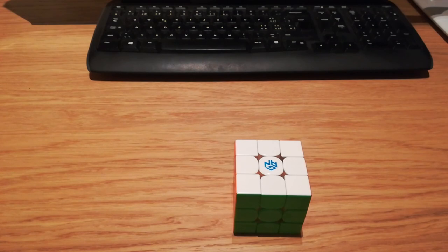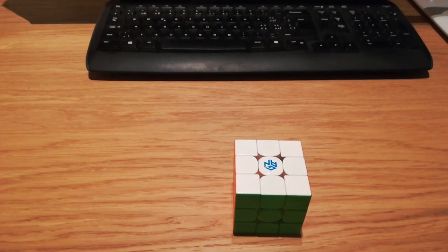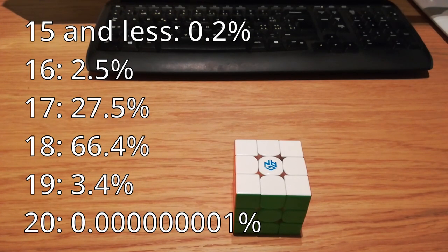At this point a thousand things were going through my head. I thought that there was no way I didn't misscramble the cube and that this was actually 24 moves in my first time ever competing. To put that into perspective, it takes a computer on average 18 moves and 20 moves at max to solve the Rubik's cube.